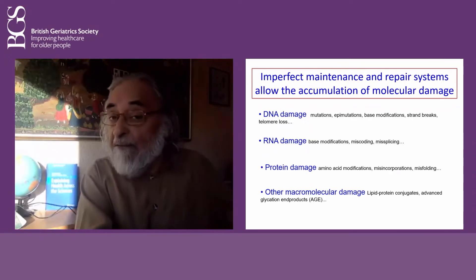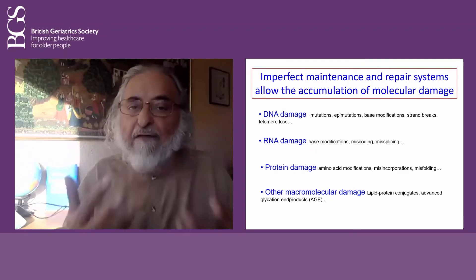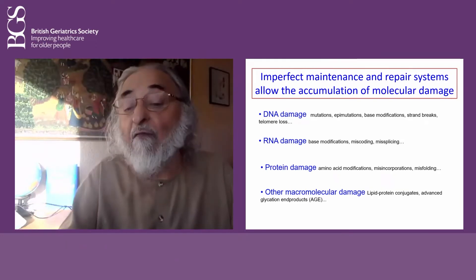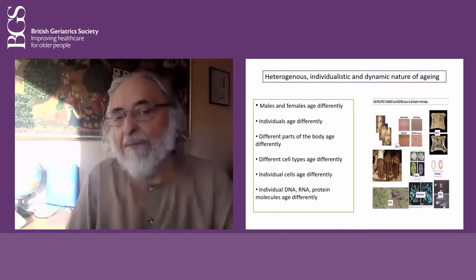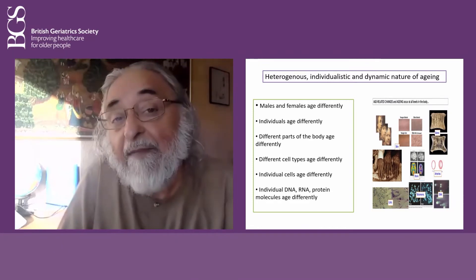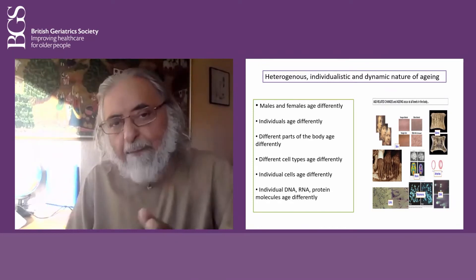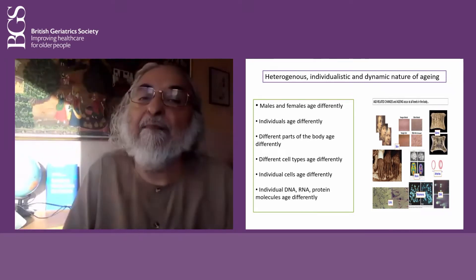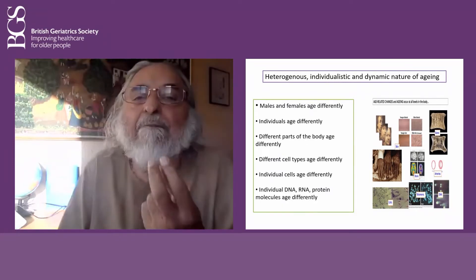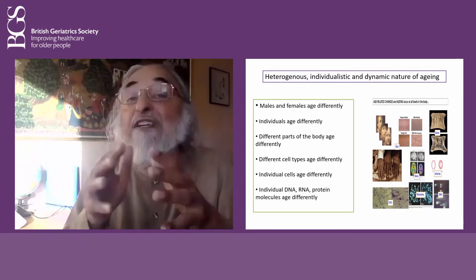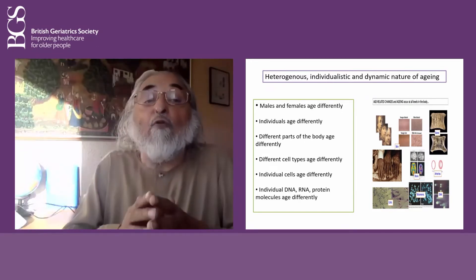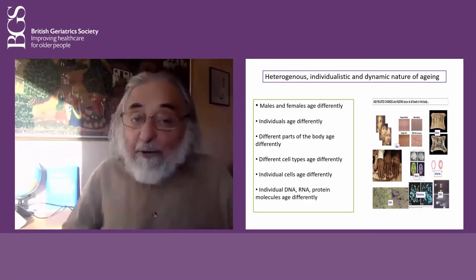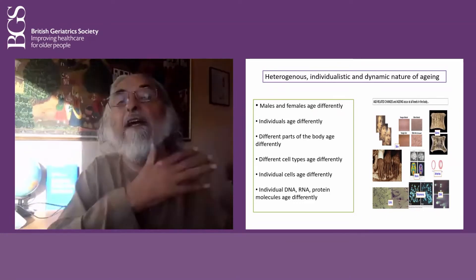Individually it might give problems to some. This is why homeodynamic space decreases. But a very important point: this process of aging, when damage accumulation happens or whatever parameter you use, is very heterogeneous and individualistic. No two people become old in exactly the same way, not even monozygotic twins — they may be a bit more similar, but not the same. No two men and women become old the same way. Different parts of the body age at different rates, according to the life history of that individual.